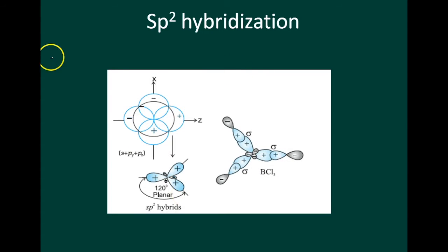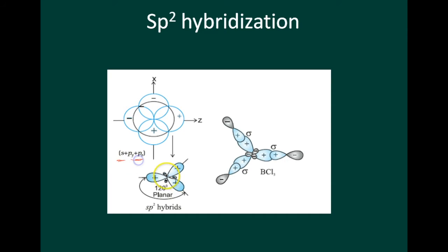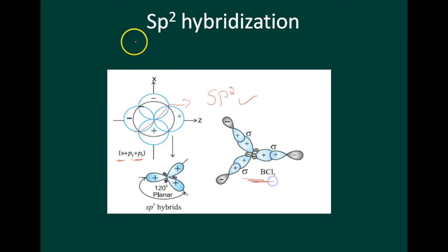Next, sp² hybridization. This involves one s orbital and two p orbitals to form sp² hybrid orbitals. The example for sp² hybridization is the BCl₃ molecule.